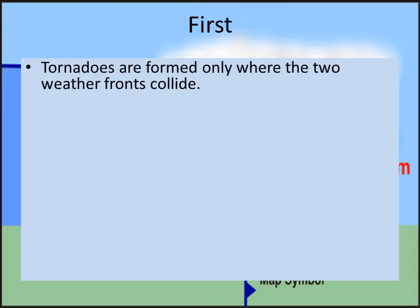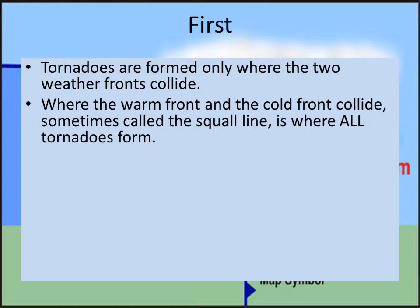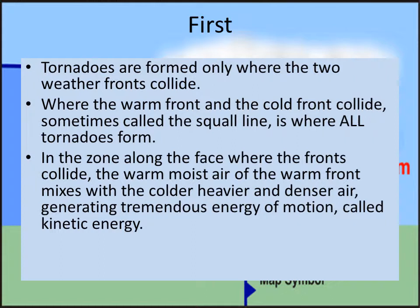Tornadoes are formed only where the fronts collide. If you're on the lighter side, you'll see it as a white tornado. If you're on the dark side, under the clouds of the cold front, you see it as a dark tornado. So it depends on whether you're on the warm front side or the cold front side as to the color of the tornado. Where the warm front and the cold front collide — sometimes called a squall line — is where all tornadoes form. They never form way back in the cold front or way in the warm front, right along the place where they collide. It's called a squall line.